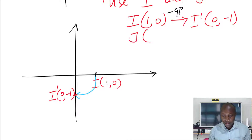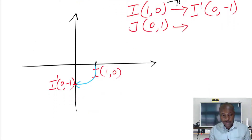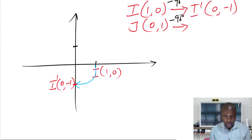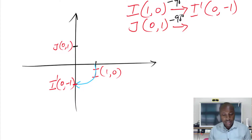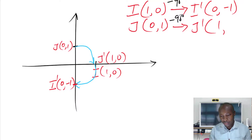Now let's see what happens to j. j is at (0,1). So after the same rotation — negative 90 degrees clockwise — j starts here at (0,1). If you rotate j in a clockwise direction 90 degrees, it will move to where i is, which is (1,0). So j prime will be (1,0).